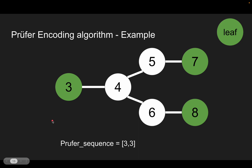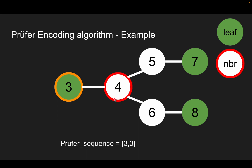In the third iteration, we find the leaf node with the smallest label, which is 3. We find its neighbor and add its neighbor into the Prüfer sequence. Then we remove the leaf node.